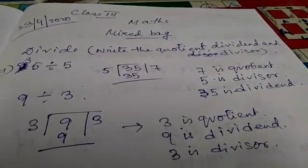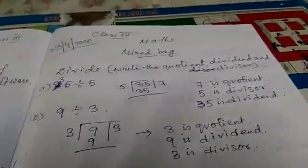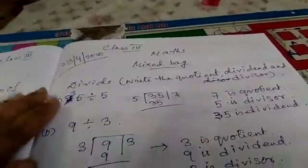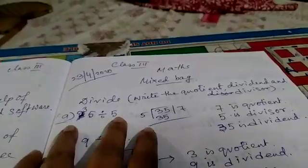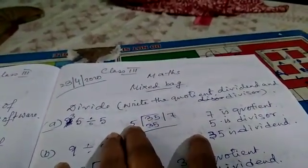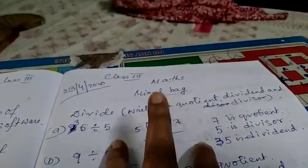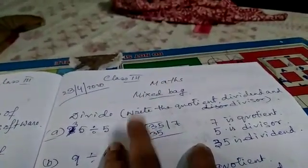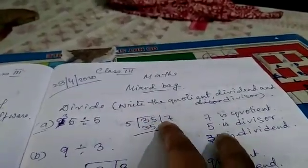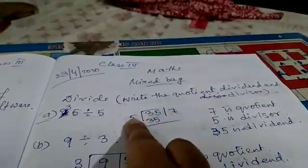Divide. Now we have to write the quotient, dividend and divisor. 35 divided by 5. We know 5×1=5, 5×2=10, 5×3=15, 5×5=25, 5×7=35. So here 7 is the quotient. This is the dividend. This is the divisor.